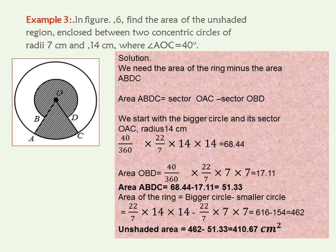Remember, we have evaluated the area of part of the ring, which is ABDC. So the unshaded region now will be 462, the area of the ring, minus 51.33, which is the area of ABDC. That gives your answer as 410.67 centimeters squared.